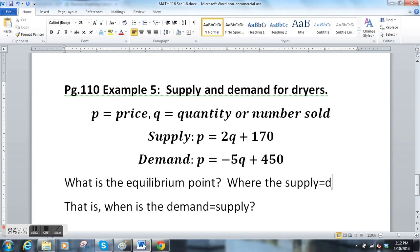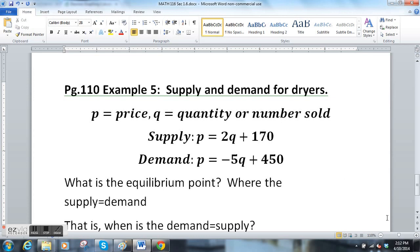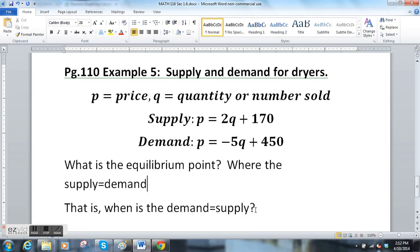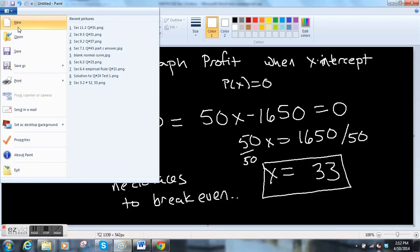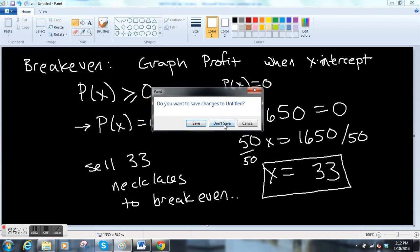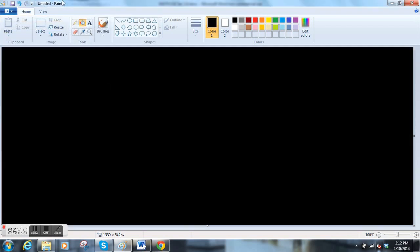There are two different functions: one is the supply function and one is the demand function. You can look at this page to see how they came up with these two equations. The question asks you what is the equilibrium point. So the equilibrium point is the place where the supply equals the demand.